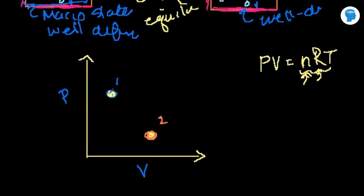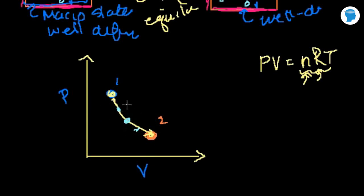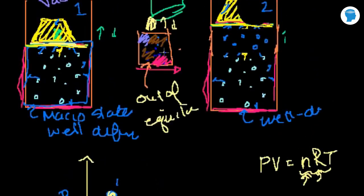I started at state 1 where pressure and volume were well-defined, and finished at state 2 where they were well-defined. But how did I get there? Because the reaction happened super fast and the system was thrown out of equilibrium, I can't draw a path between the two states. Pressure and volume were not well-defined going from state 1 to state 2. They're only well-defined if every intermediate step is still almost in equilibrium — we'll talk more about that in the next video.